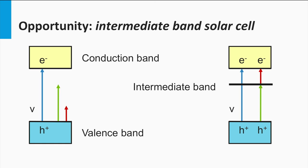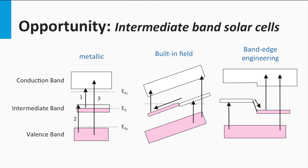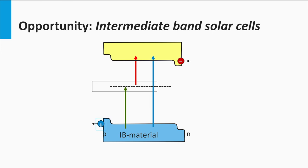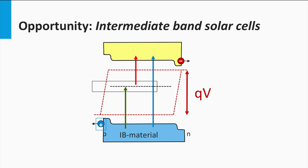The high-energetic photons can excite an electron from the valence band into the conduction band, just like in a normal semiconductor material. The difference is that photons below the band gap can excite an electron from the valence band into the intermediate band. A second photon is required to excite the electron from the intermediate band into the conduction band. Various ideas exist on how these charge carriers are excited, transported and collected. Most importantly, the two photons with energy smaller than the band gap can effectively result in quasi-Fermi-level splittings larger than the energy of one of the low-energetic photons.